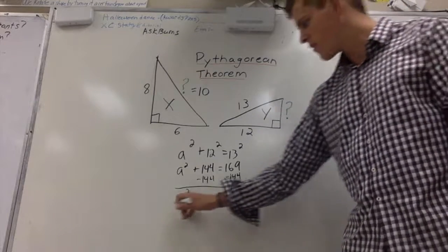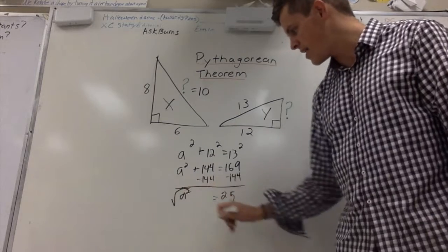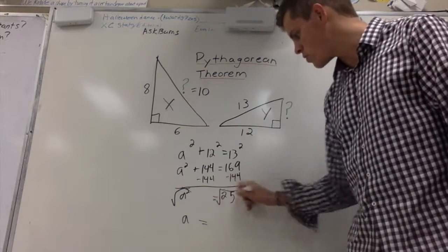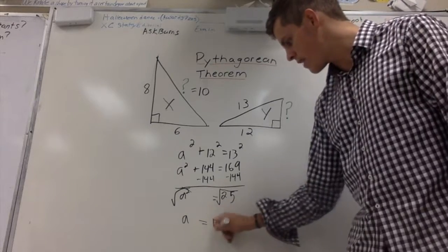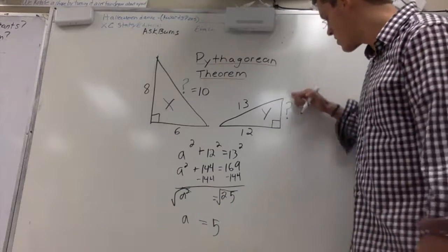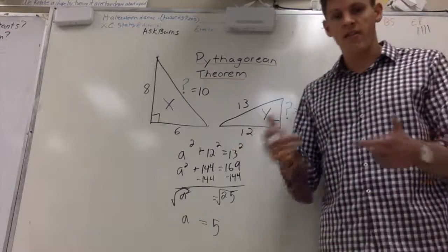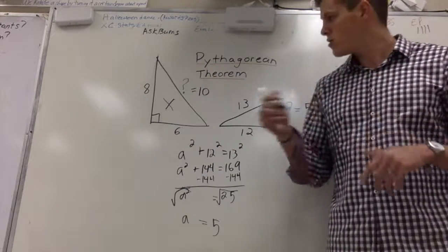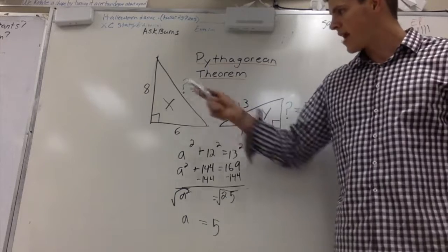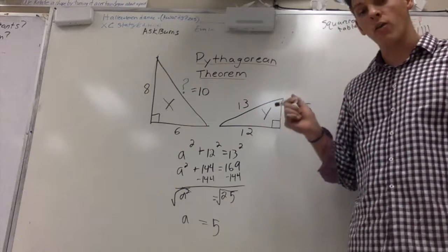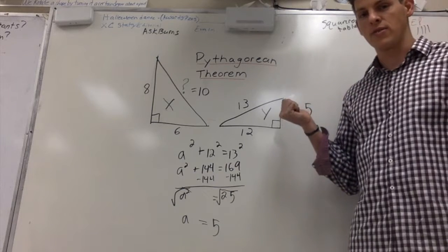From there, if I take, again, the square root of A squared, I end up with A. And if I take the square root of 25, I get 5. In this case, A is going to equal 5. There you have it. There's the Pythagorean theorem, how to solve for a side where the hypotenuse is missing, and how to solve for and figure out when it's not the hypotenuse that is missing.